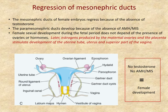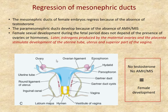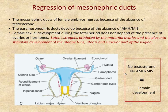In the female, the mesonephric ducts are supposed to regress — we don't need the efferent ductules or the vas deferens. The paramesonephric ducts persist and develop further. Female sexual development during the fetal period does not depend on functional ovaries or any hormones. If the testis-determining factor is absent or non-functional, the embryo develops in the female direction. Estrogens come from maternal ovaries and the placenta. Without testosterone and anti-Müllerian hormone, typical female development occurs.